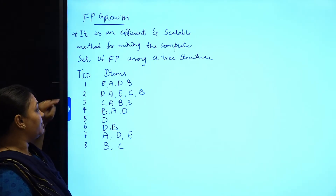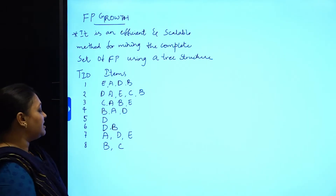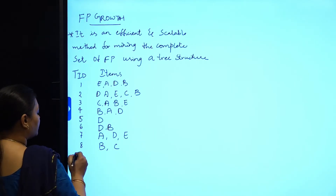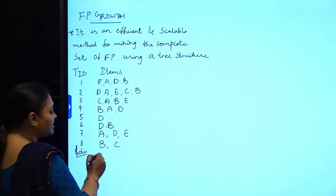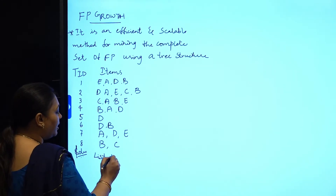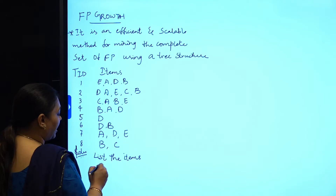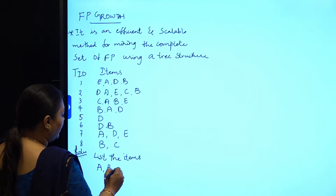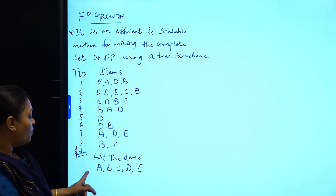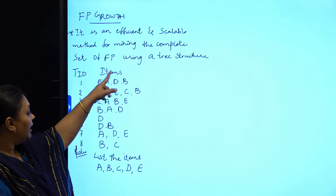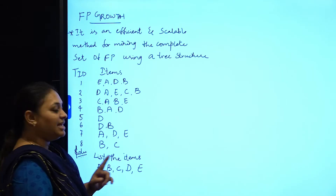You can see an example here. There is a transaction ID column and an items column. There are a total of eight transactions with different items. First, we need to list the items. The items present are: A, B, C, D, and E — five items in total. There are no other items like F or G.